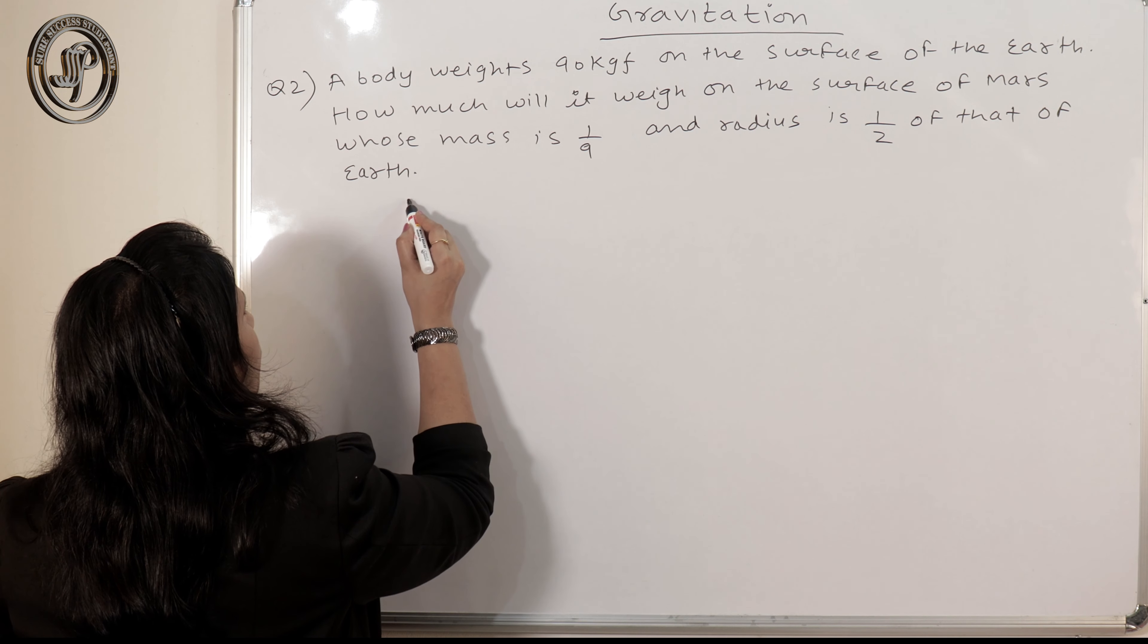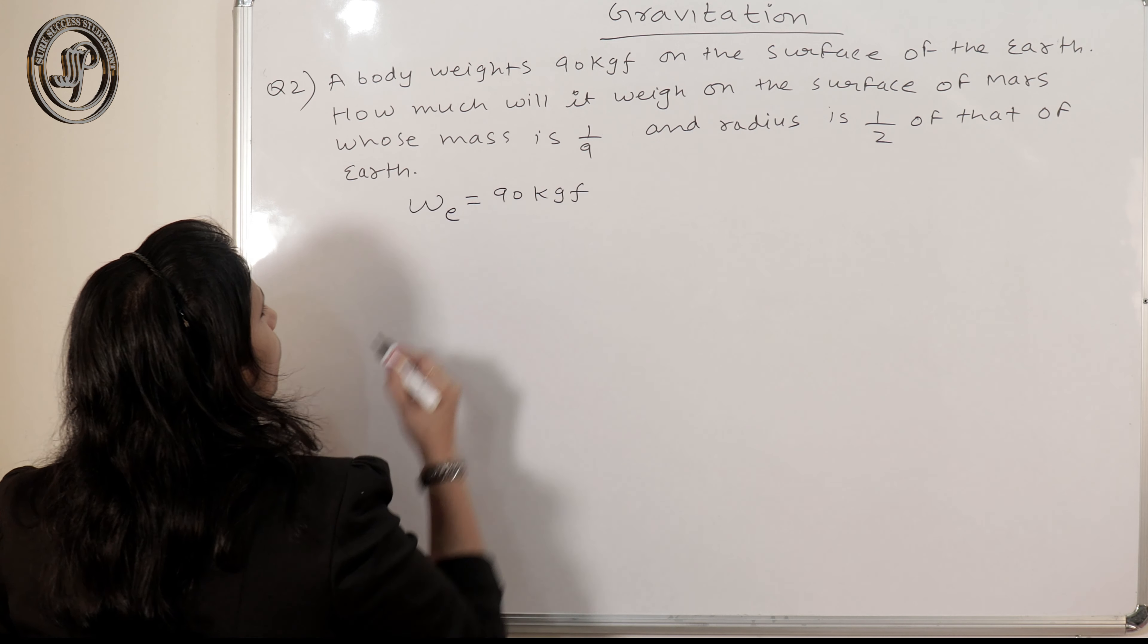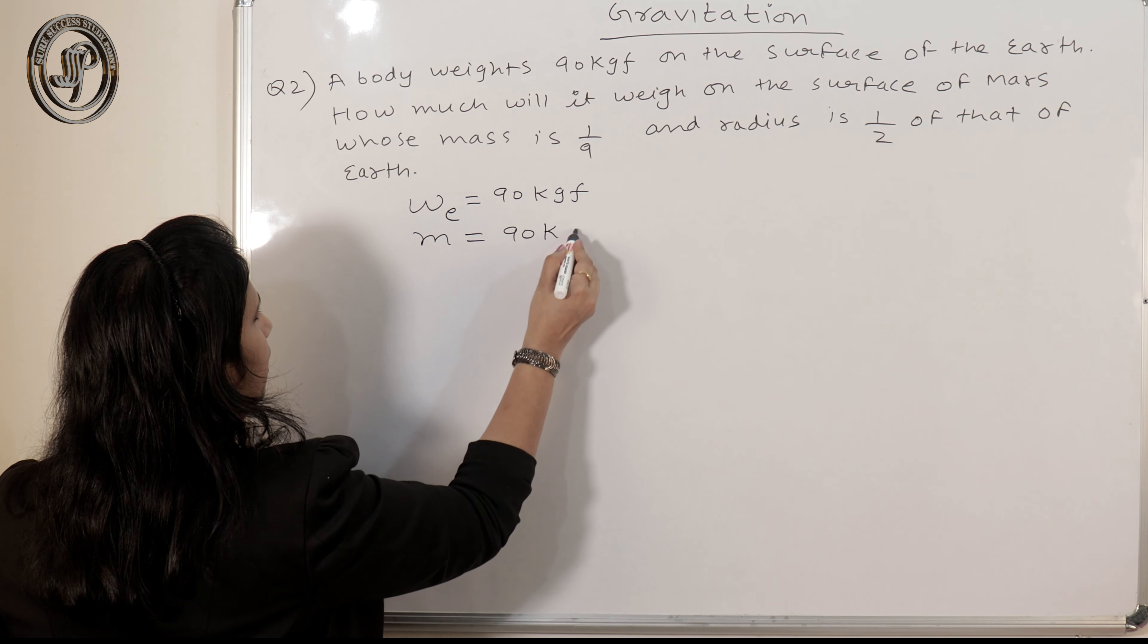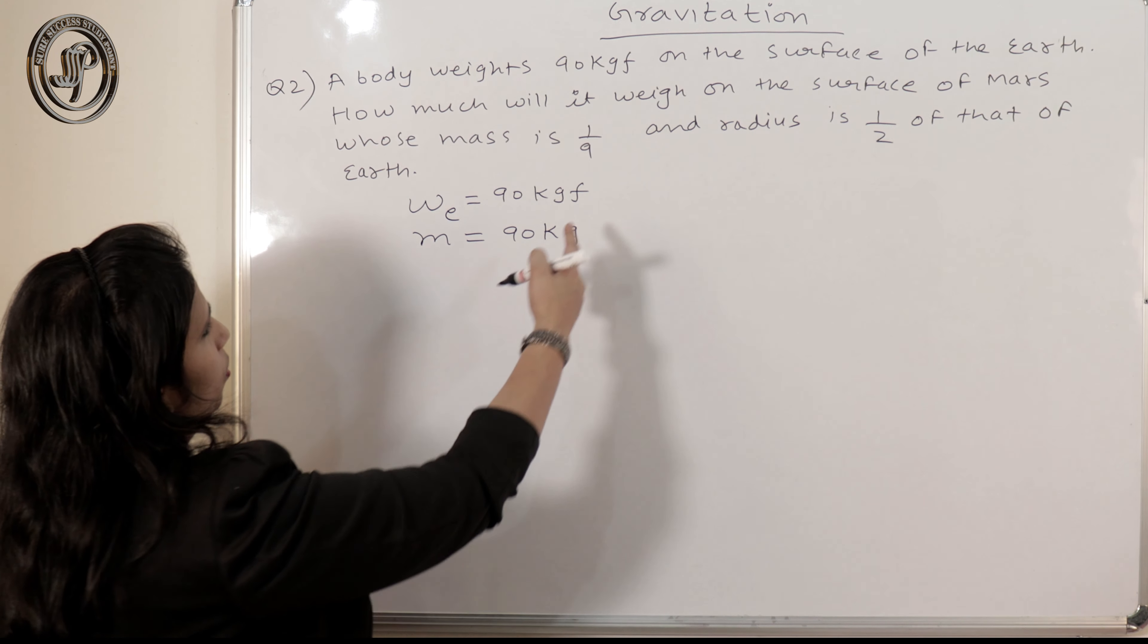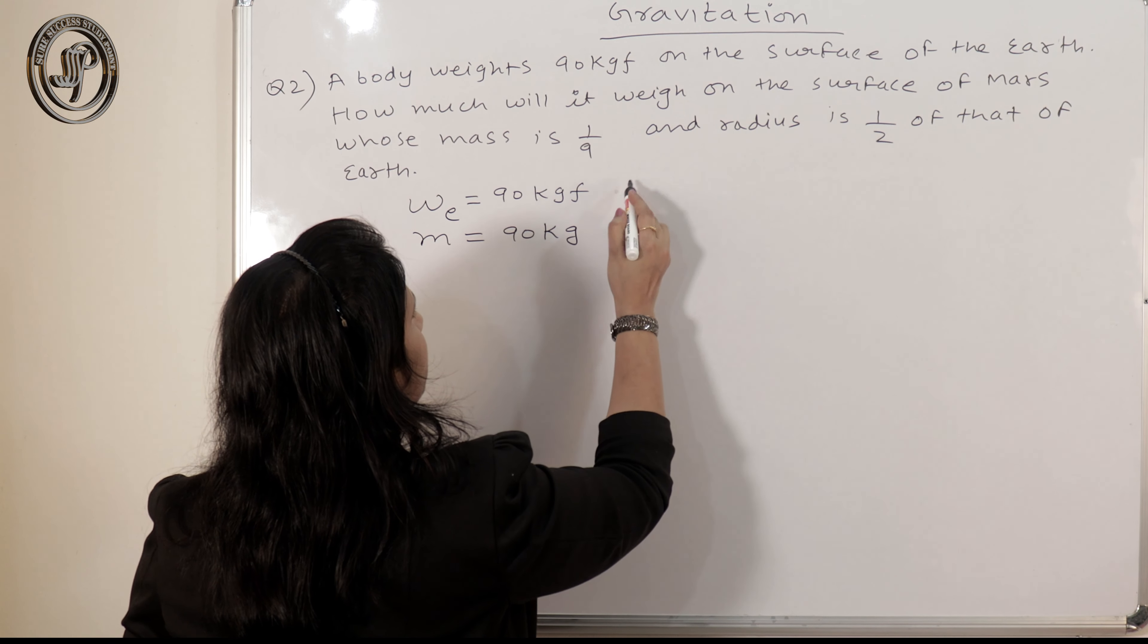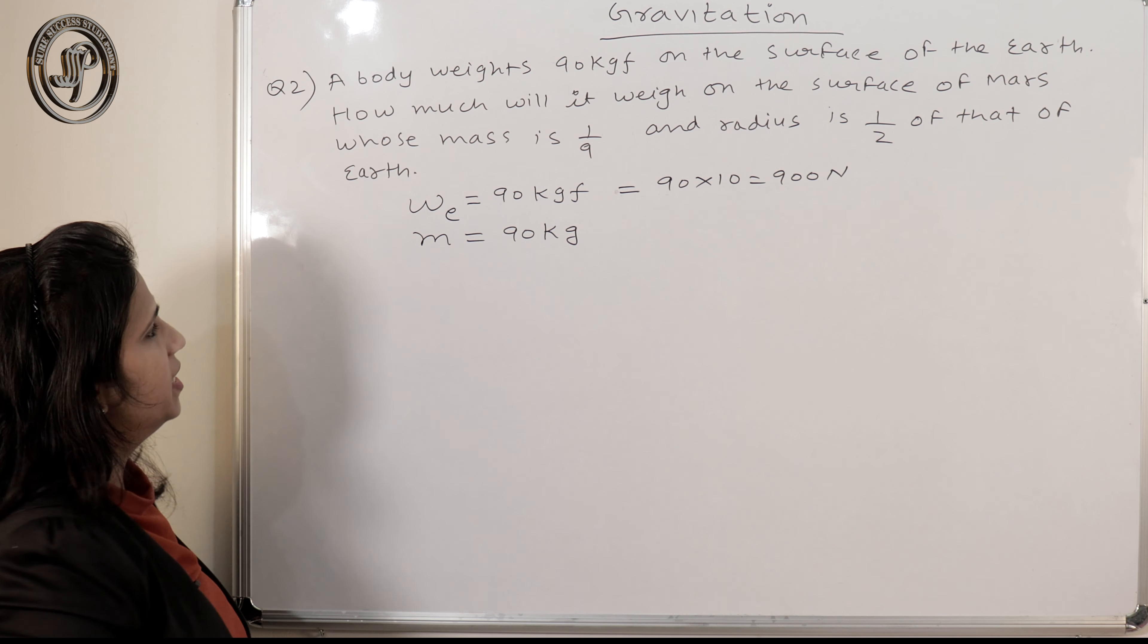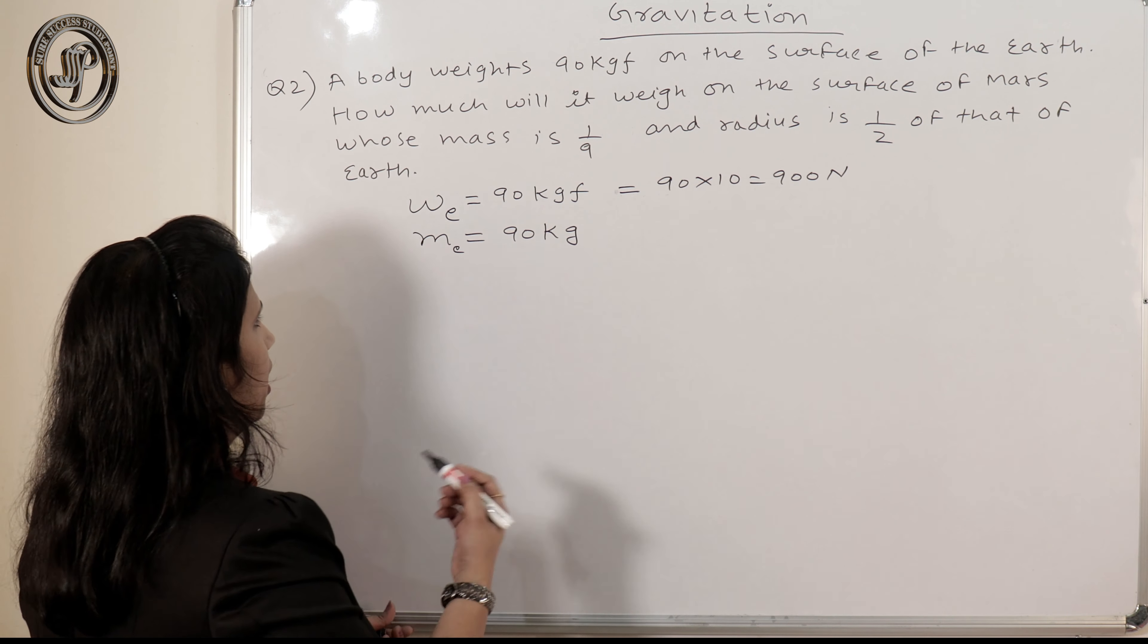So how can we do this? Weight of the body on the surface of earth is given, that is, how much weight on the surface of earth is 90 kgf. What is kgf? Kgf is the gravitational unit of force. Then the mass will be 90 kg. If we want to convert this into newton, then we know the gravity on earth is 9.8 or 10. So if we multiply it by 9.8 or 10, we get the weight in newton. But if I don't need to calculate it into newton, kgf is the gravitational unit of force. So mass is 90 kg, that mass is given on the surface of earth.